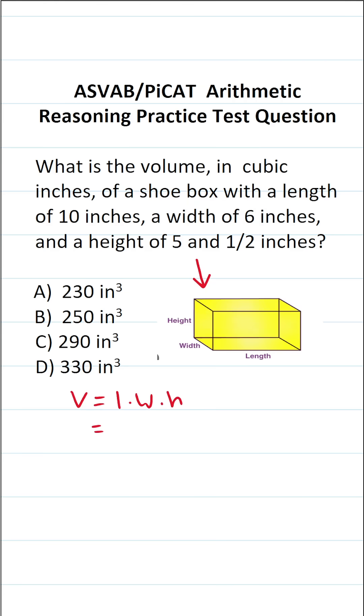What is the length of our shoebox? It's 10 inches. What is its width? It's 6 inches. And what is its height? It's 5 1/2 inches. This first part's very easy to do. 10 times 6 is 60, so this becomes 60 times 5 1/2. Now this is where most people would get stuck. How are we going to do 60 times 5 1/2?